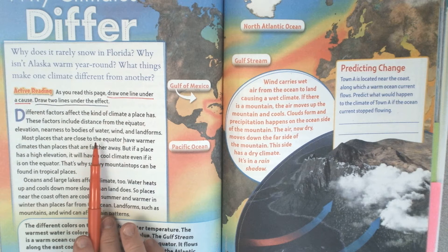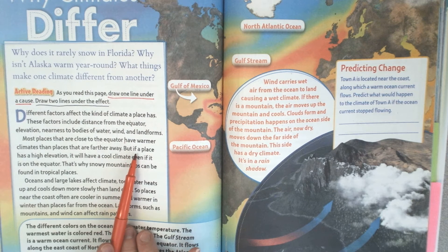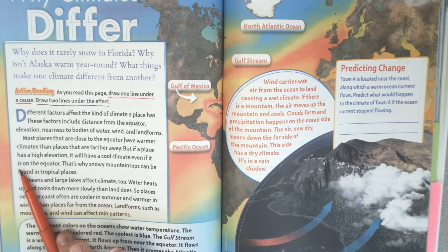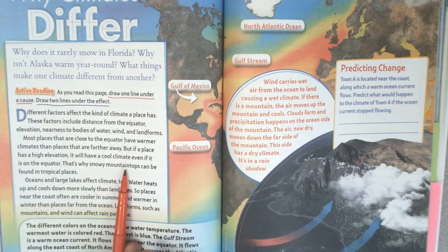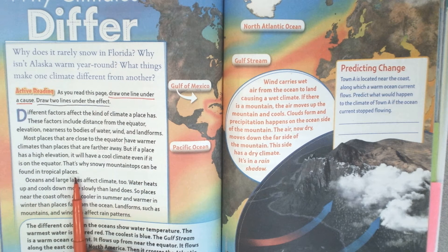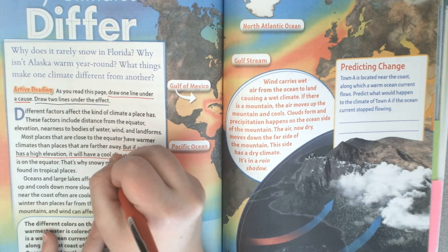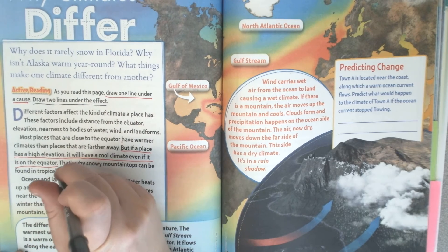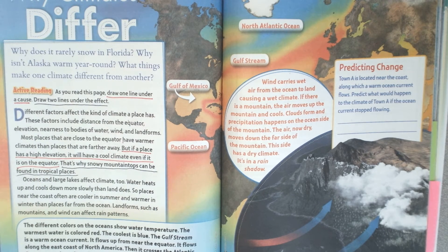Most places that are close to the equator have warmer climates than places that are farther away. But if a place has a high elevation, it will have a cool climate even if it is on the equator. So here the cause is high elevation, and the effect is that snowy mountaintops can be found in tropical places — much like the giraffe with the snowy mountaintop.